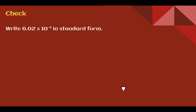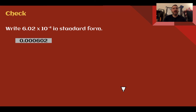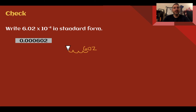Check your understanding: write the given number in standard form. Pause the video now and complete the check. You should have got 0.000602. Start with the base factor times 10 to the negative 4, so move 4 places in the negative direction — to the left — and fill the gap with zeros where the decimal point goes: 0.000602.